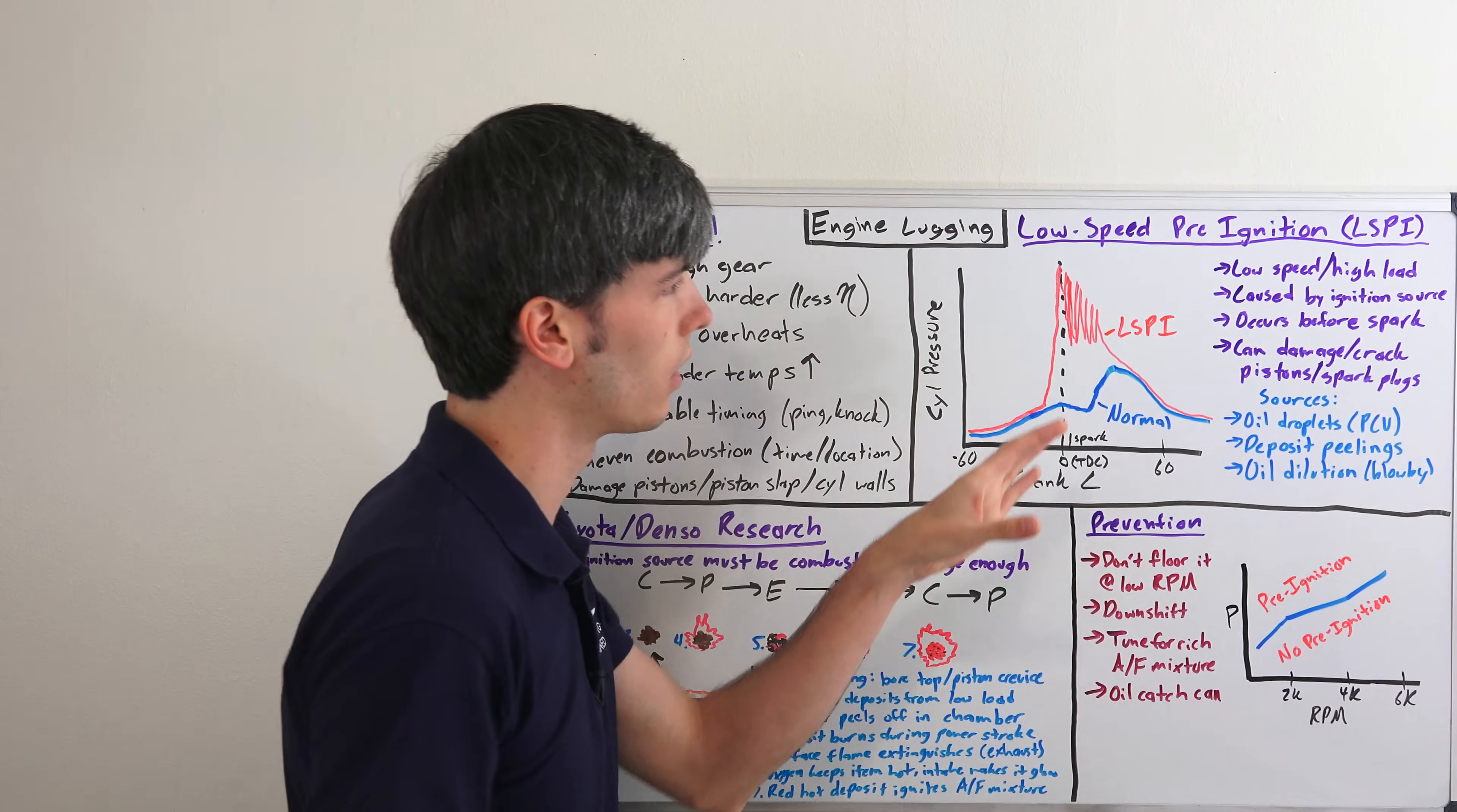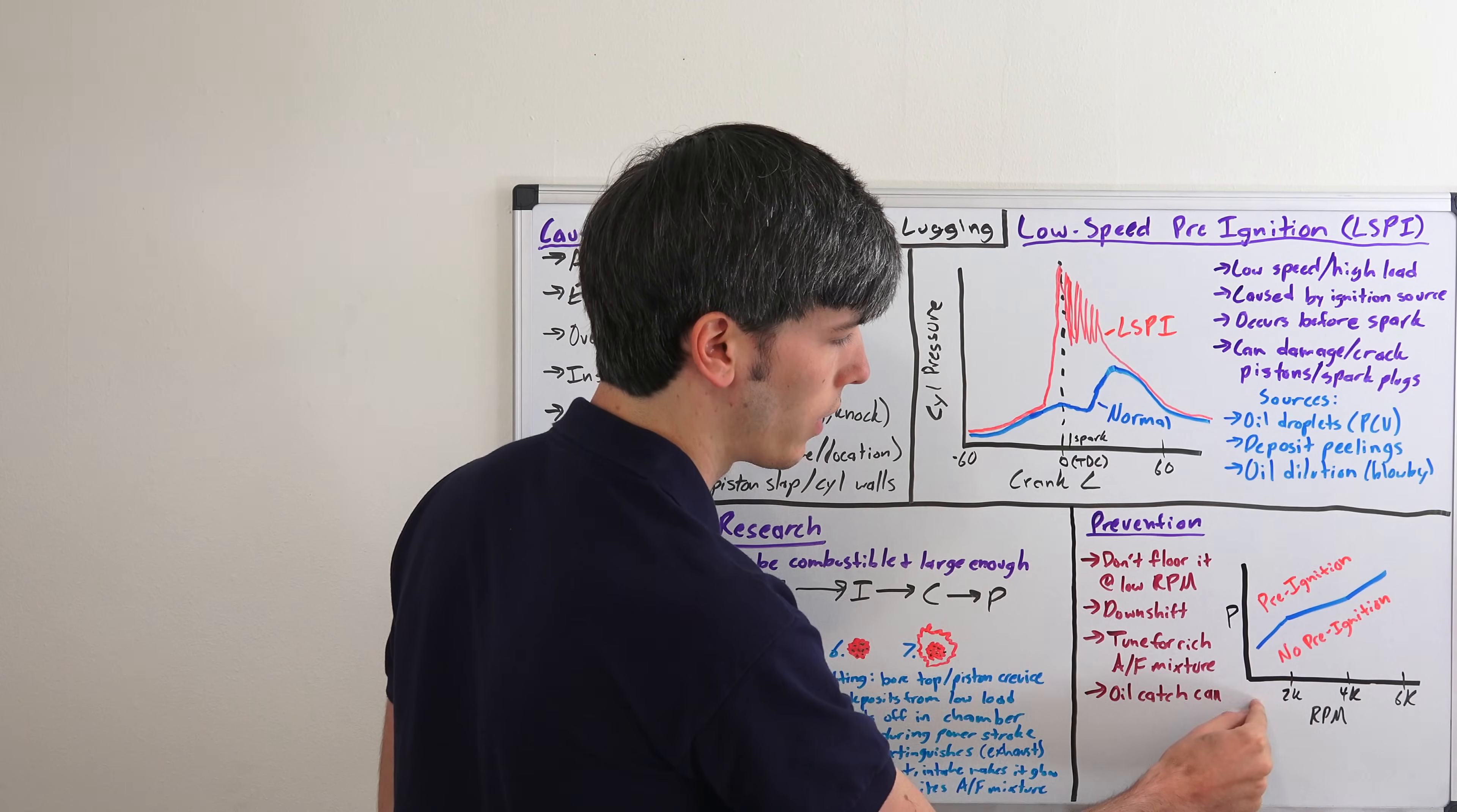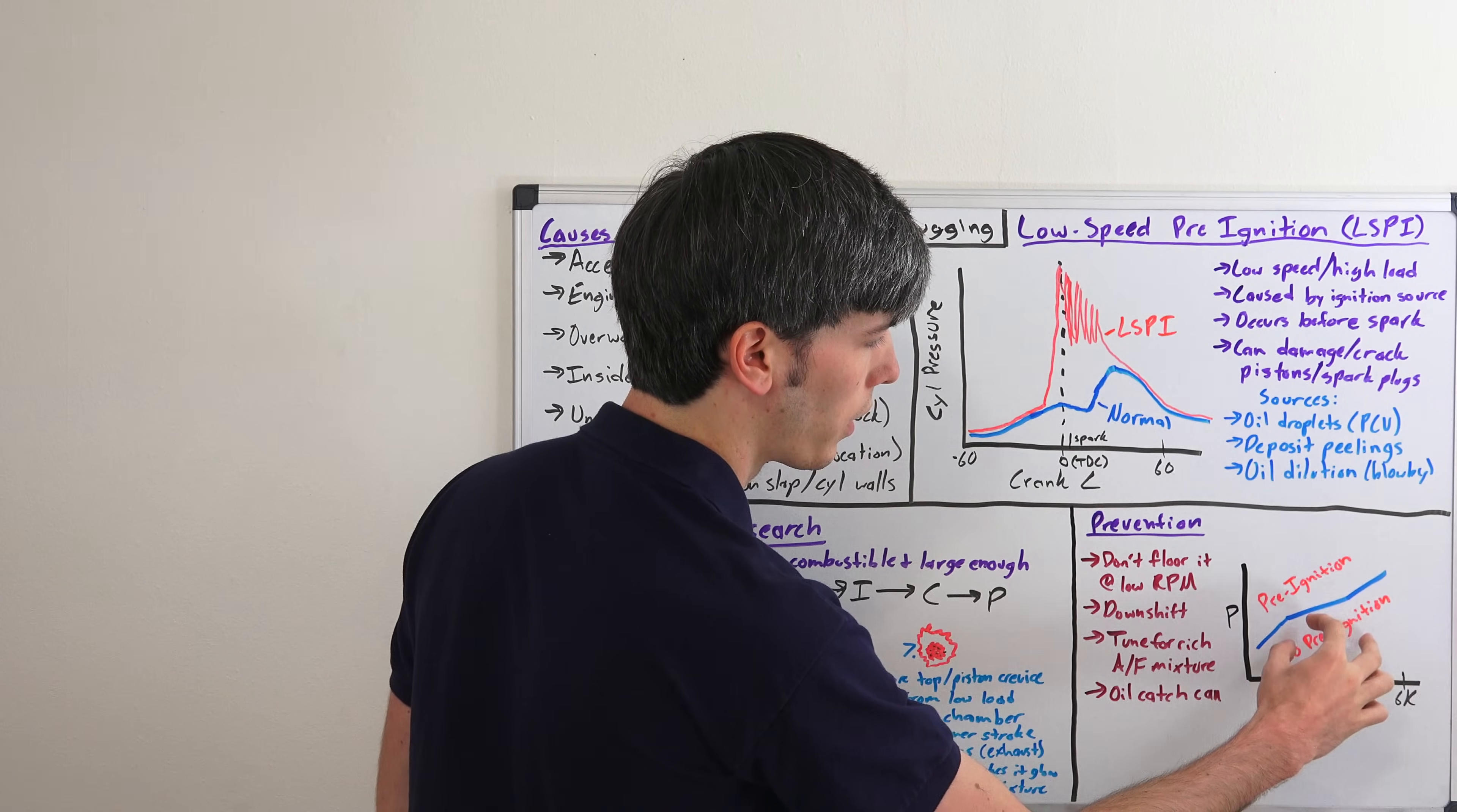the engine RPM and where you would have pre-ignition. It's not that pre-ignition can't occur at higher engine RPMs, it's just that it's far less likely and that's what this graph that they figured out shows. Because as you get into the lower engine RPMs, it's a much lower pressure at which pre-ignition will occur. Anything above this line, pre-ignition would occur.